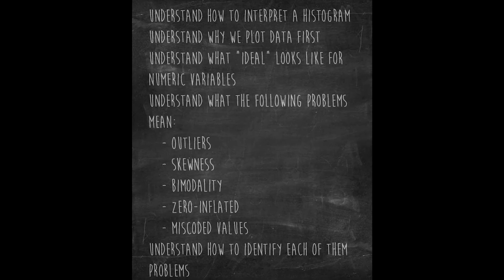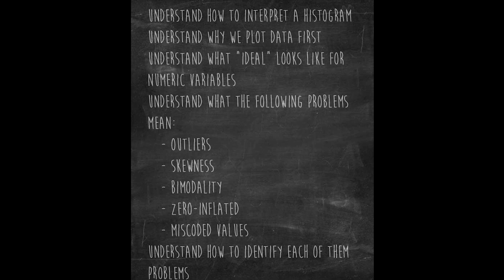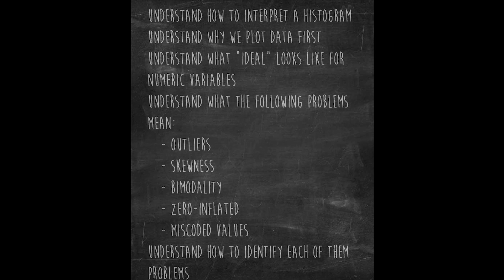So with that, let us review our learning objectives for today. Understand why we plot data first. Understand what ideal looks like for numeric variable distributions. Understand what the following problems mean: outliers, skewness, bimodality, zero inflated, miscoded values. And understand how to identify each of those problems. Peace out.